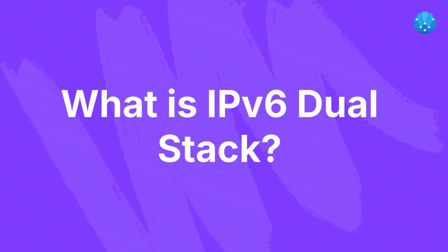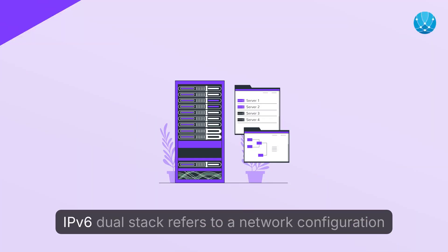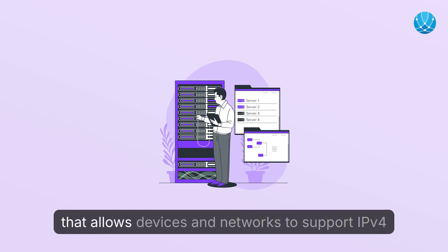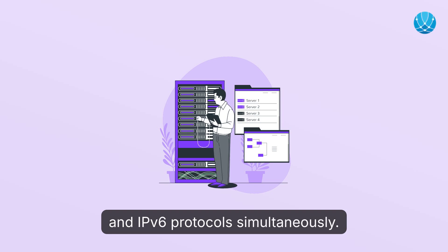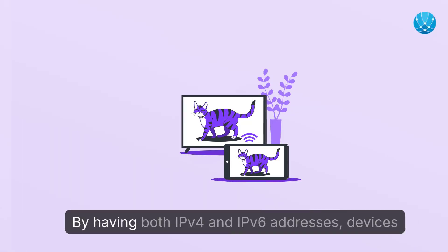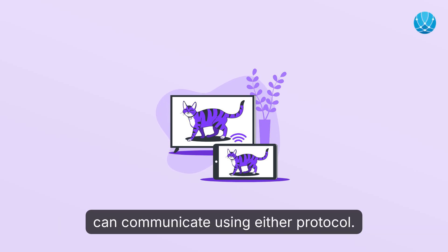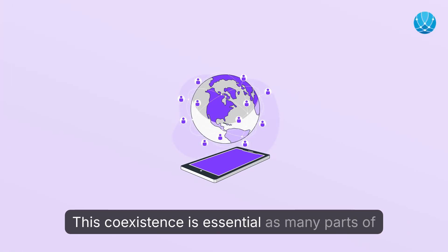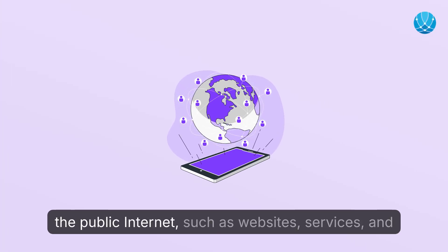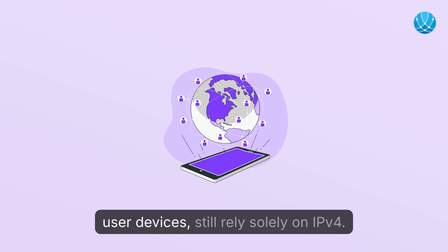IPv6 Dual Stack refers to a network configuration that allows devices and networks to support IPv4 and IPv6 protocols simultaneously. By having both IPv4 and IPv6 addresses, devices can communicate using either protocol. This coexistence is essential as many parts of the public internet — such as websites, services, and user devices — still rely solely on IPv4.